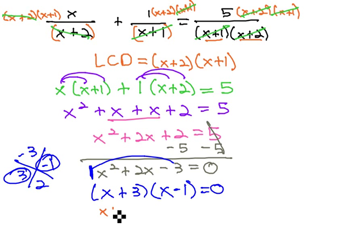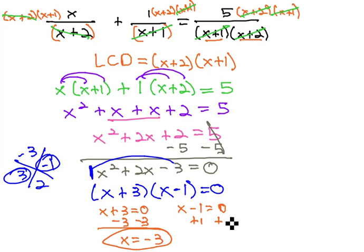We can now set each factor equal to 0, x plus 3 equals 0 and x minus 1 equals 0, and quickly solve by subtracting 3 to get x equals negative 3, or adding 1 to get x equals 1.